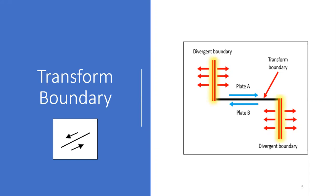Divergent boundaries are spreading centers where magma is pushed to the surface, which drives plates apart in opposite directions. Thus, a transform boundary located between the two spreading centers will assist to offset this plate motion. Notice that on each side of the transform boundary, plates are sliding horizontally in opposite directions.